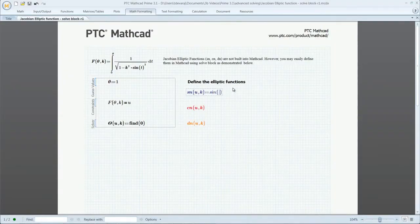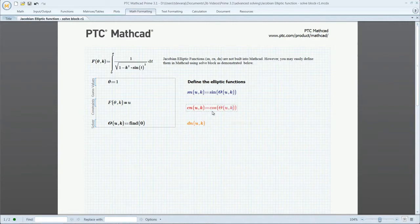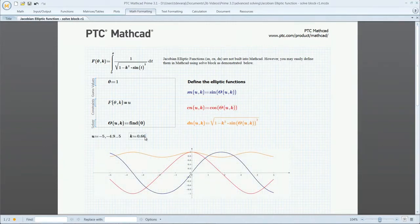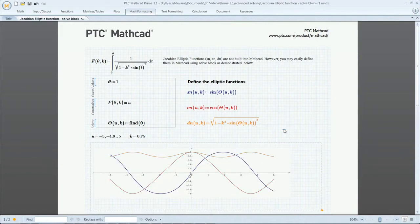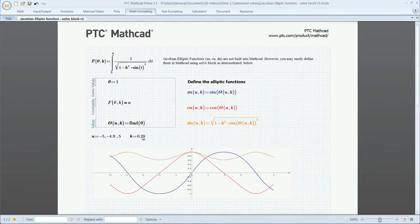For situations where pre-built functions are not available, PTC MathCAD gives engineers the ability to extend the core capabilities by designing their own functions. Take the example of Jacobian elliptic functions. In this case, the user creates the definition of the function, which can then be added to their templates for quick reuse.